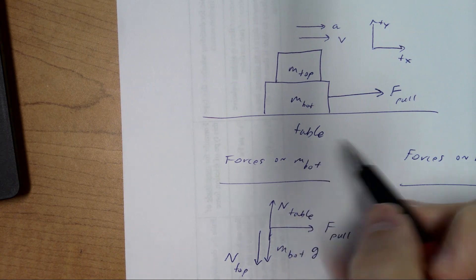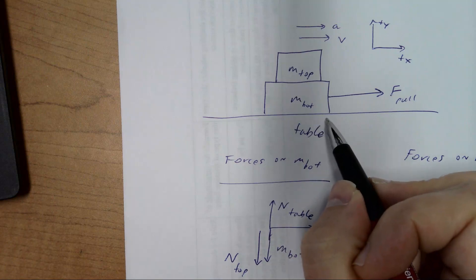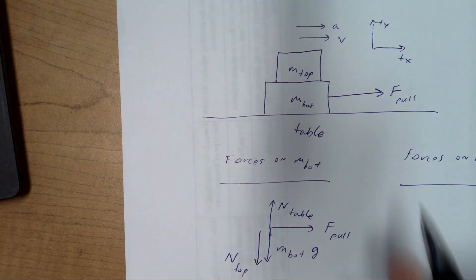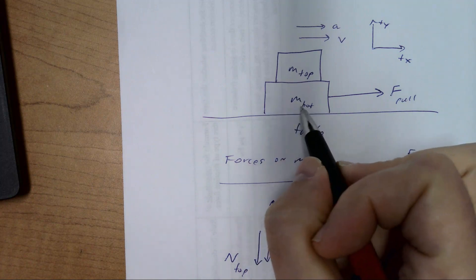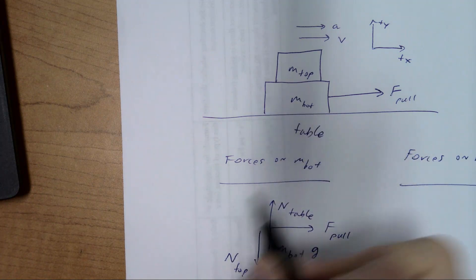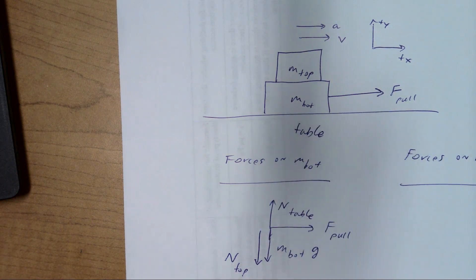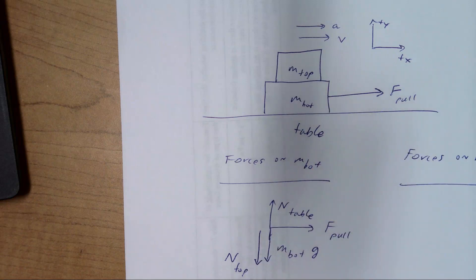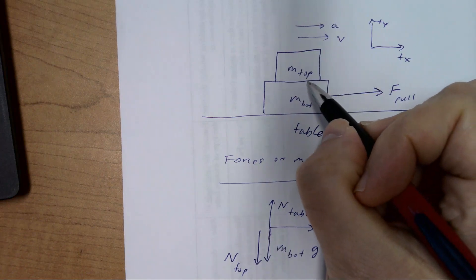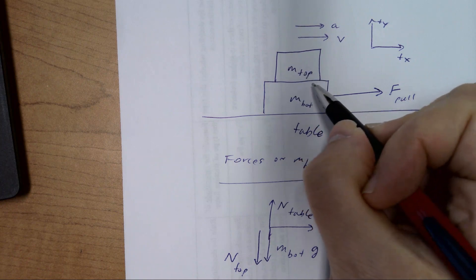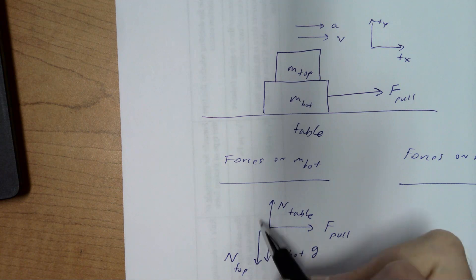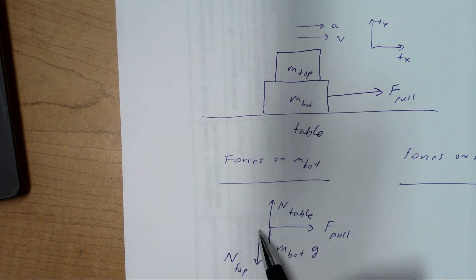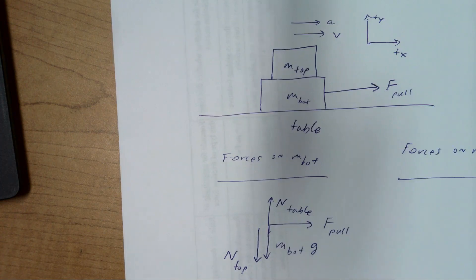The problem says there's no friction between the table and the bottom block, so we won't include a kinetic friction force there. However, if the top block is not going to slide across the bottom block, there must be a frictional interaction between those blocks. I think it's easier to think about the friction force acting on the top block first, then we'll come back to the bottom block.